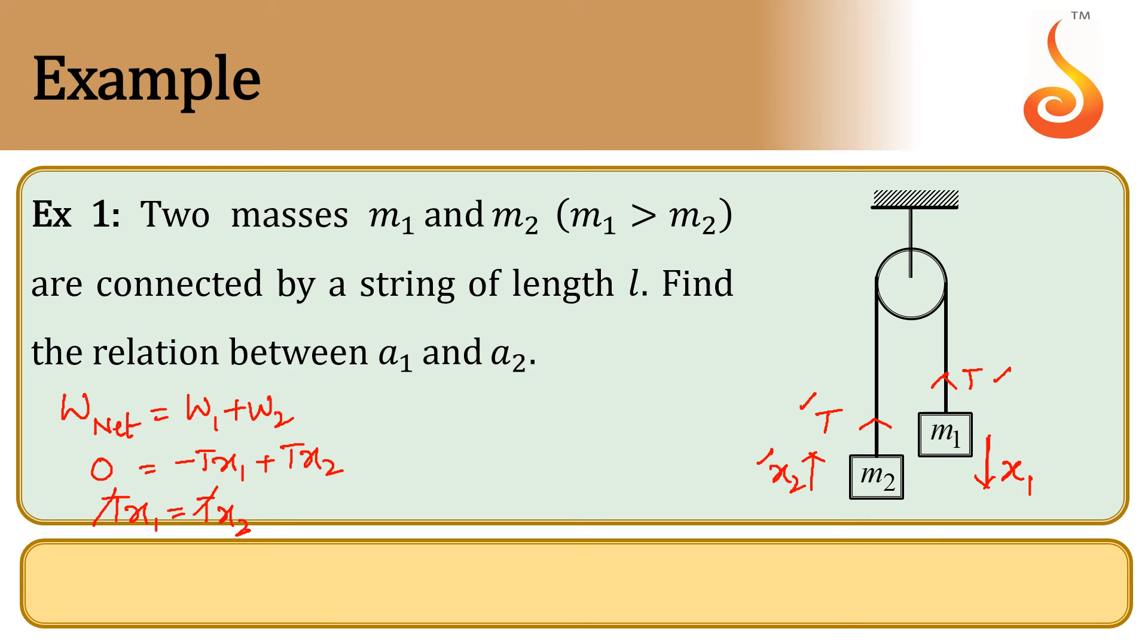If we double differentiate both sides, that means D by DT square of X1 is equal to D square by DT square of X2, which will give A1 is equal to A2.